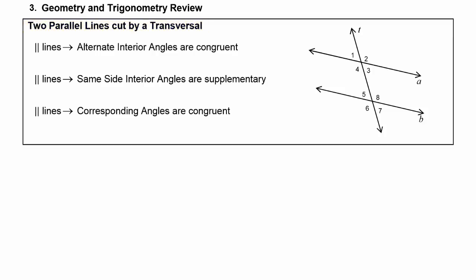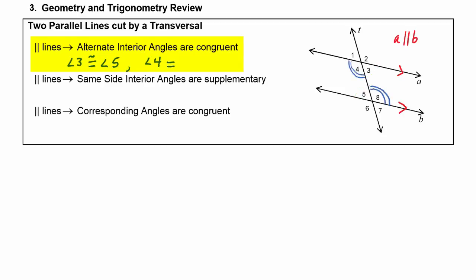In this picture, we have line A parallel to line B, and we mark that by putting matching chevrons on the lines. When you have parallel lines, the alternate interior angles are congruent to each other. In our picture, angle three is congruent to angle five, and angle four is congruent to angle eight — those are the alternate interior angles.